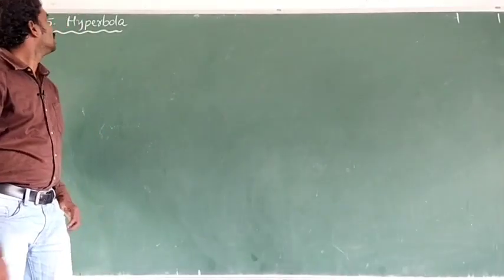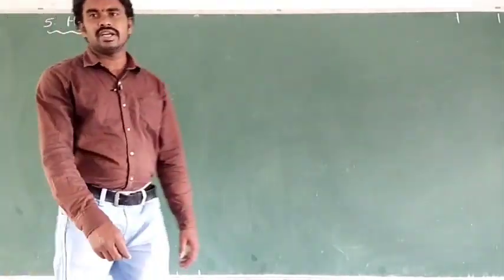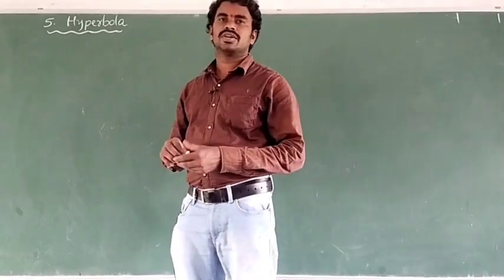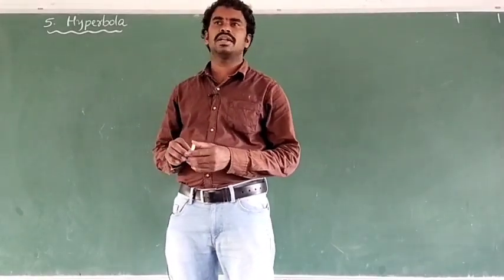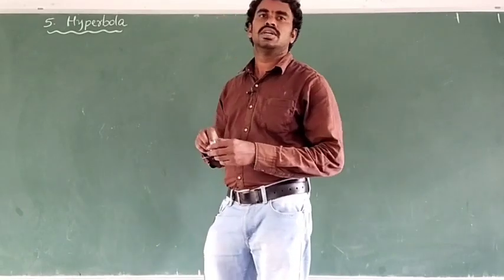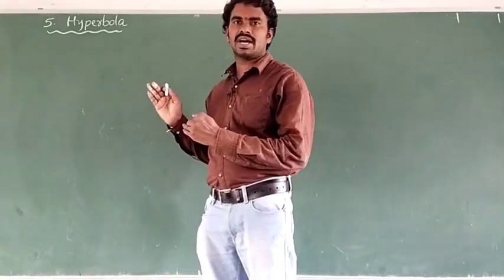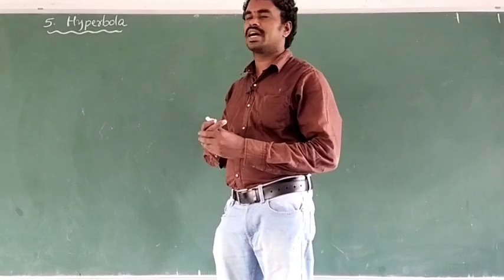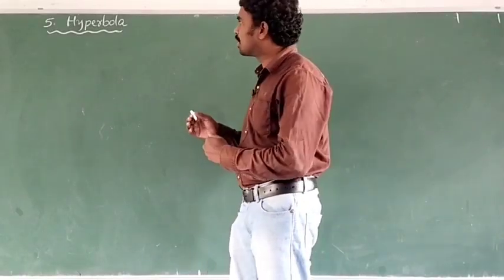This is the second year, fifth chapter on hyperbola. In this conic section, we covered parabola, then ellipse, and after that hyperbola. The hyperbola formulas are similar to the ellipse formulas with small changes, which we can observe in this chapter.